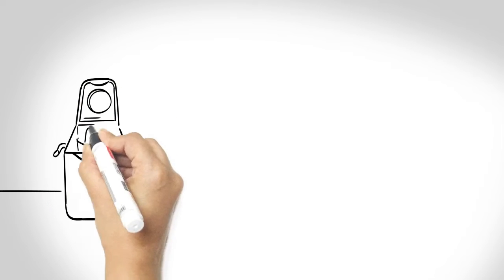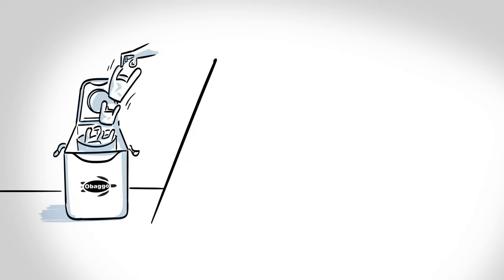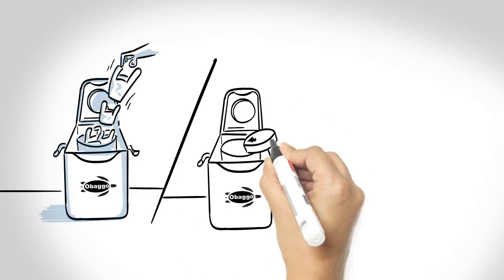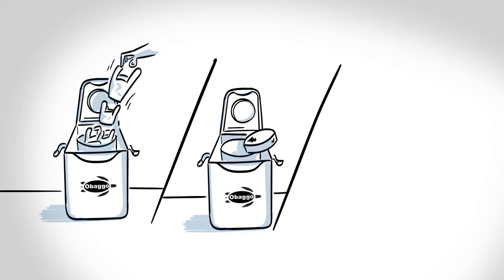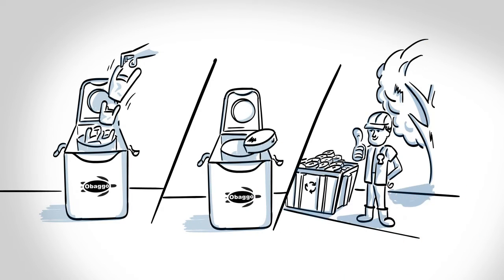But thankfully, there is now a solution. Obago has developed an appliance that lets you change the shape of your plastic bags into a sort of soft hockey puck, which is no longer thin and flimsy and is gladly accepted in kerbside recycling systems.